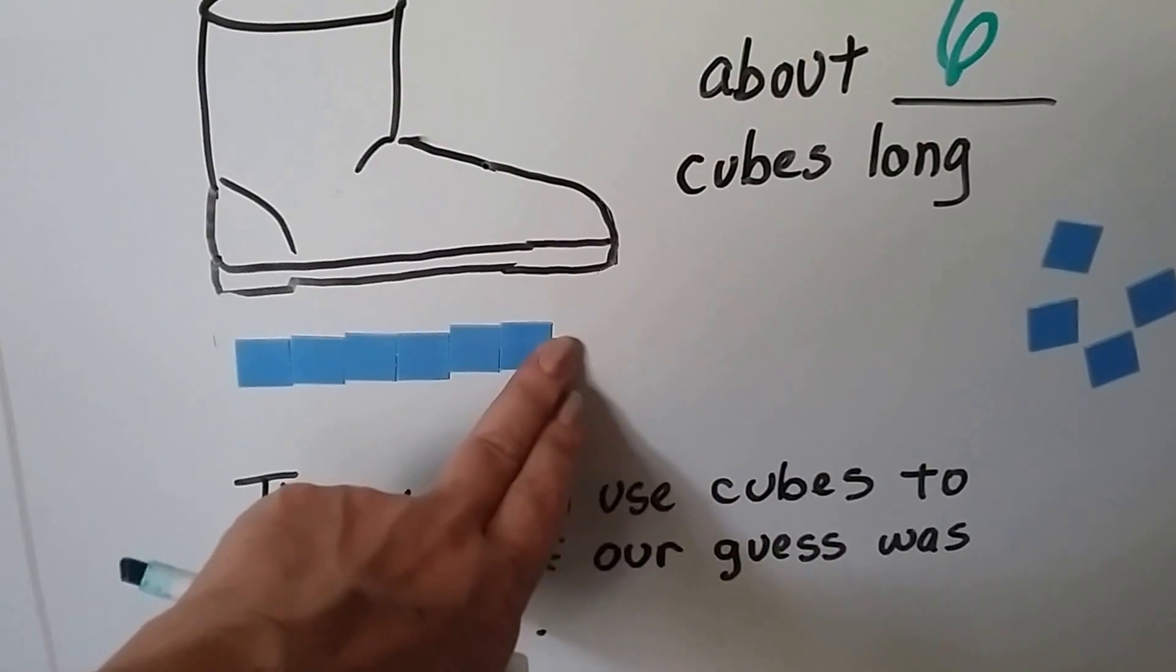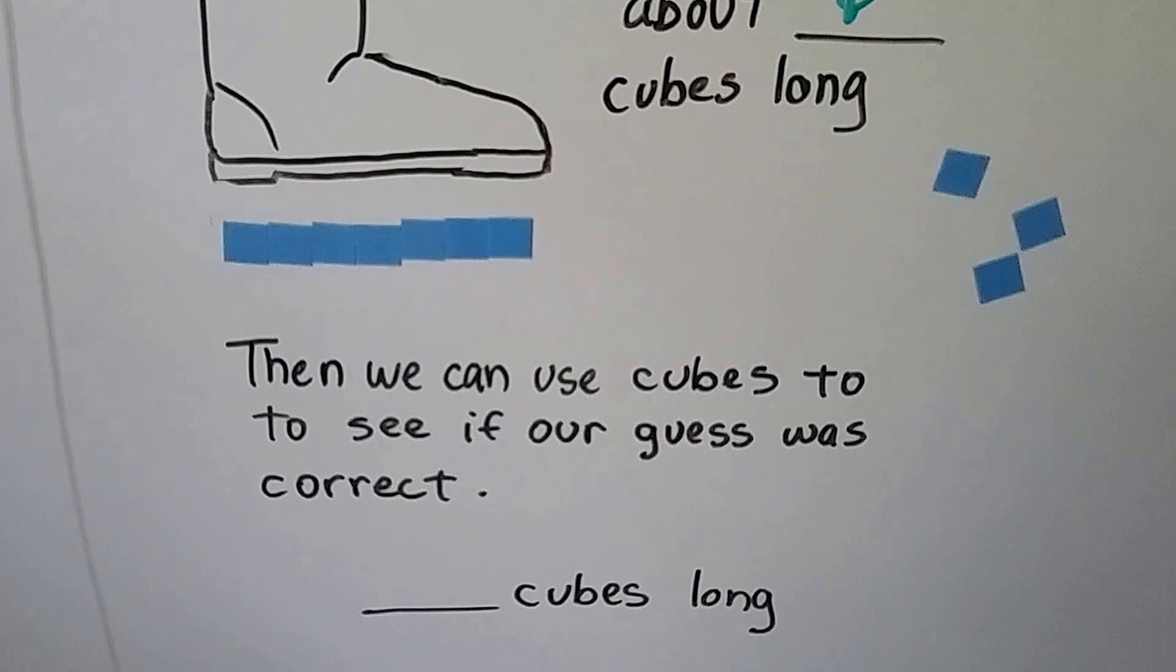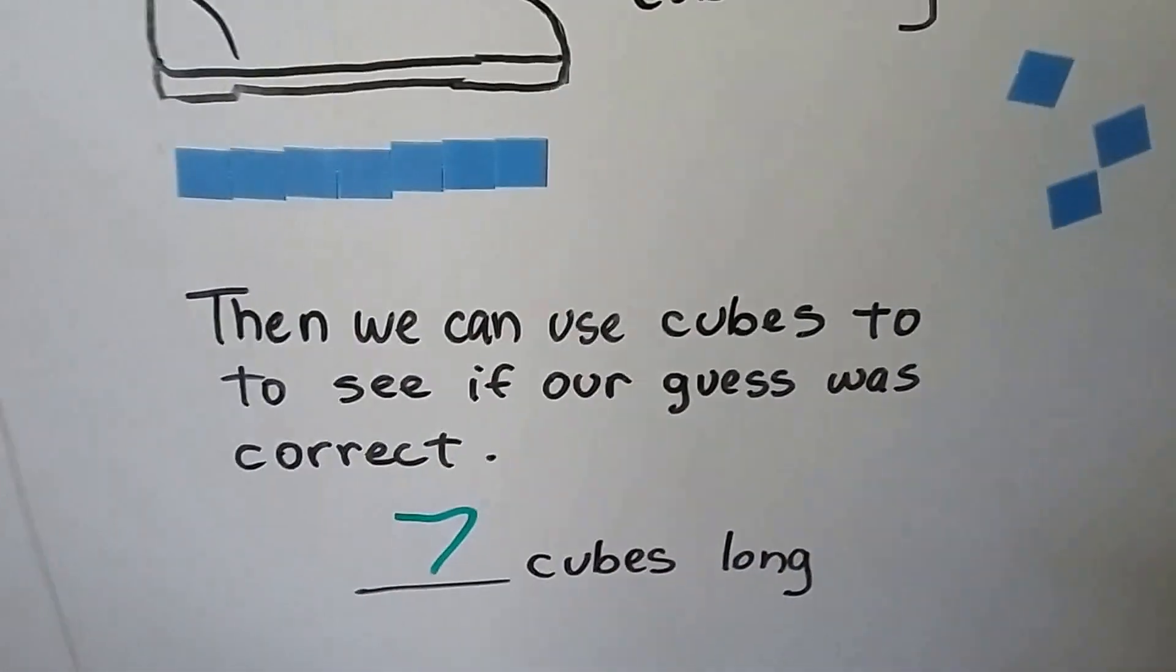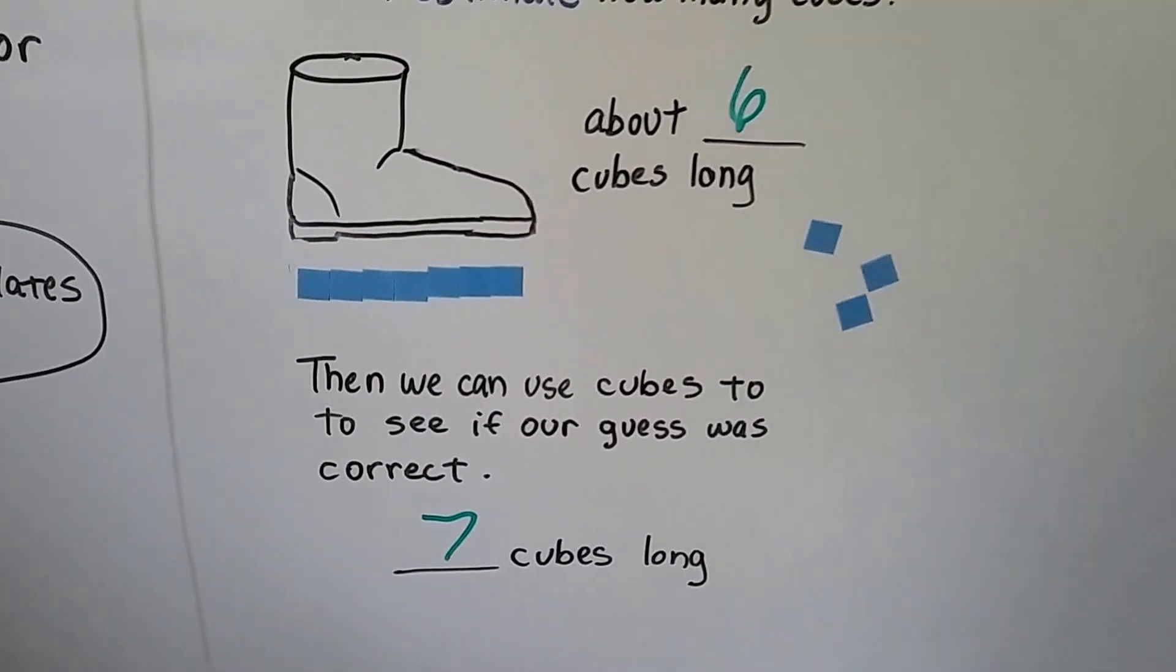Well actually it looks like we can put another cube here, doesn't it? See that? So really it's about seven cubes long. We guessed six and we were close. When we actually used the cubes we found out they were seven.